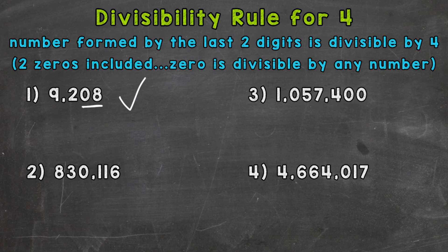On to number 2, 830,116. So let's take a look at the last two digits, and we have a 16. So is 16 divisible by 4? Can we divide 16 by 4 and get an answer without a remainder? Yes, therefore, our original number 830,116 is divisible by 4 as well.